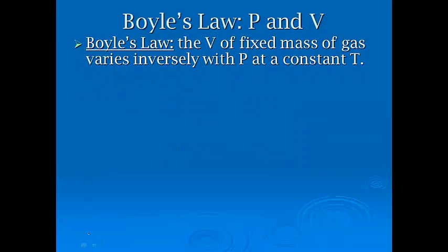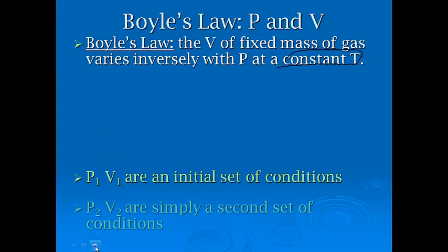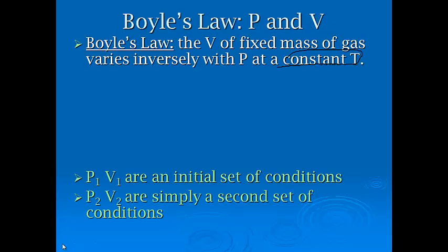Now let's do a math problem. For Boyle's law, statement, the volume of a fixed mass of gas varies inversely or indirectly with pressure at constant temperature. You're going to see temperature is going to be the only one we're going to, the other one we're going to study here. So P1 and V1 in your equation, what you need to fill in here is the actual equation, and it's going to be P1 V1 equals P2 V2. P1 and V1 are what we refer to as an initial set of conditions. P2 and V2 are simply a second set of conditions. So let's do a math problem on this for you.